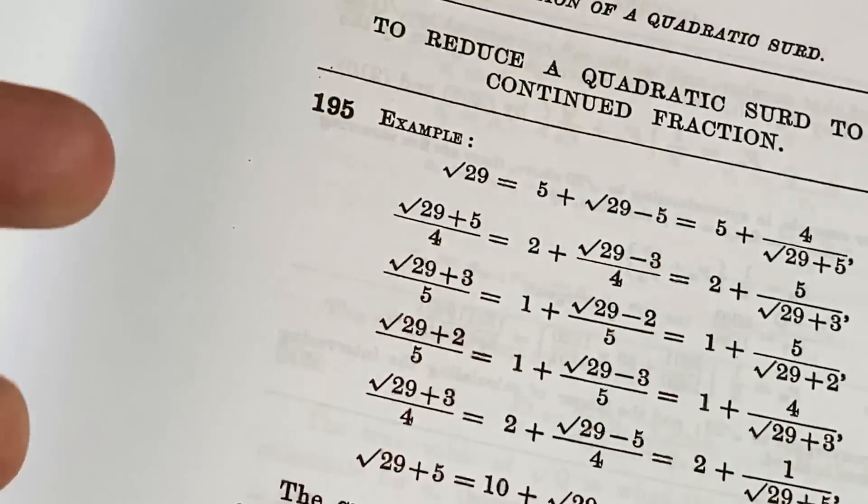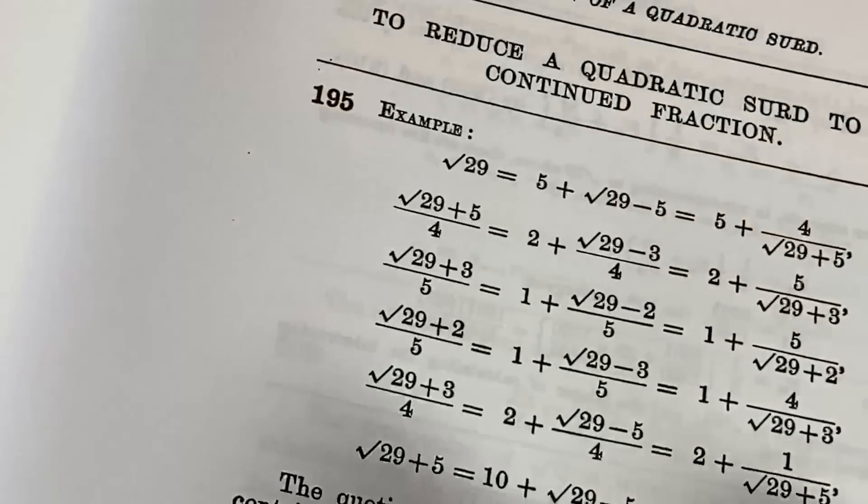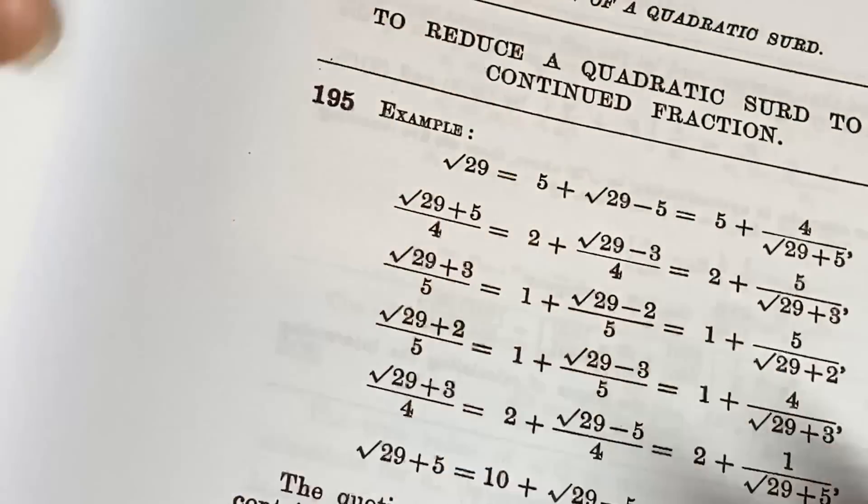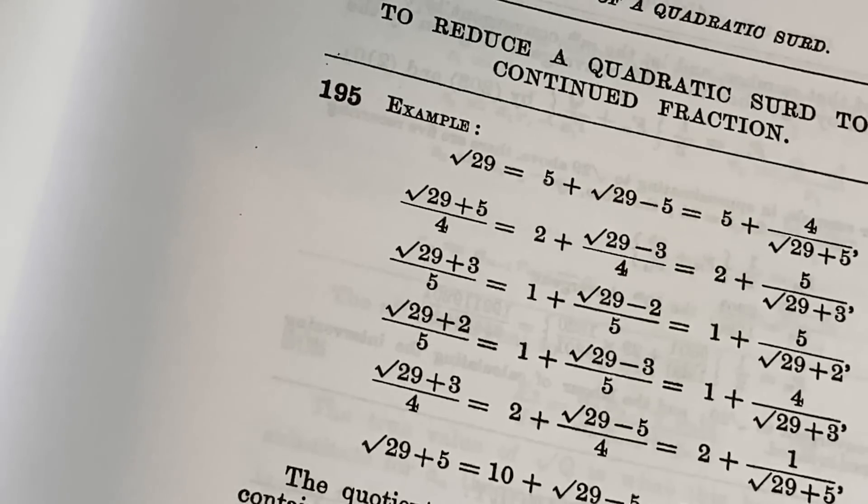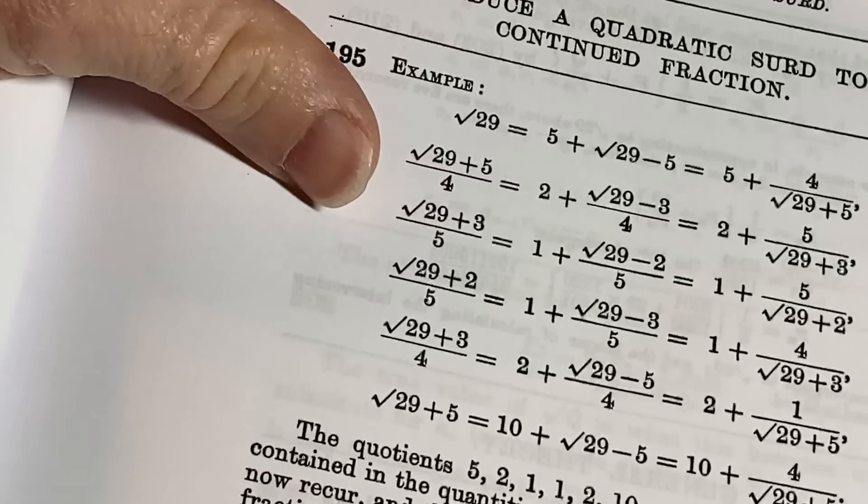I think what they did here was they basically took this expression here, the square root of 29 minus five, and they multiplied by one. They multiplied by the square root of 29 plus five over the square root of 29 plus five, which is one. That's going to give you 29 minus 25, which is four. Boom. Ramanujan style, right? So the work is missing, right? So how do you know that? Well, you just have to know math. So the fact that he's able to do that in his head or with a pencil shows a lot. Shows that the dude had some serious skills, right? Ramanujan was no joke.